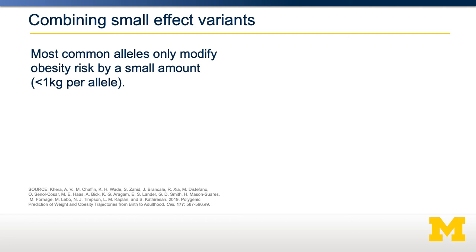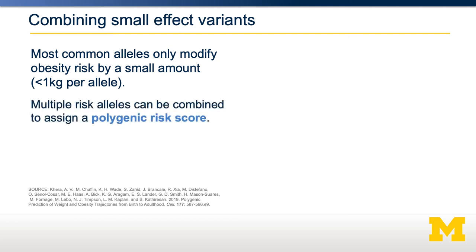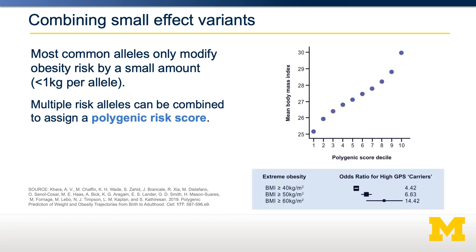However, common alleles only modify obesity risk by a small amount — generally much less than a kilogram per individual allele. We can use something called a polygenic risk score to sum the effects of these alleles. Each allele is assessed and an individual is scored based on whether they carry most of the obesity-causing alleles or the fewest. The score is shown in deciles, with 10 indicating the most obesity alleles and 1 indicating the fewest.